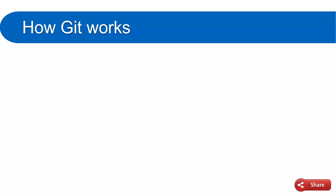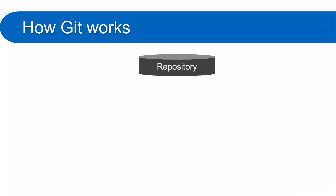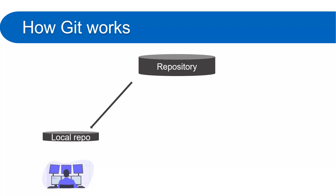Now there is a difference in how Git works. Git is a distributed version control system. I want to clarify a very common misunderstanding: just because Git is called a distributed system doesn't mean we have multiple repos on the server. We only have one repository on the server. The key difference is that when a new developer joins the team, a local repository is created on their machine.